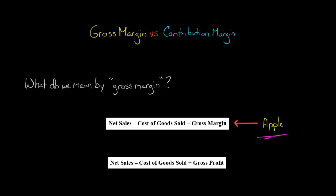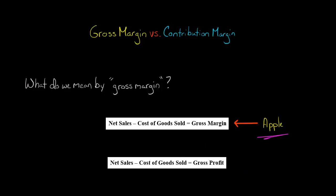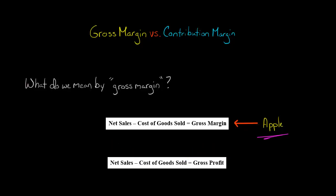Apple and a lot of other companies define gross margin as their net sales minus their cost of sales, or cost of goods sold. But sometimes people say that's actually gross profit when you take net sales and subtract cost of goods sold. And when you take gross profit and divide it by net sales, that's a company's gross margin. So we're going to ignore that distinction in this video — we're going to use Apple's definition of gross margin, which is net sales minus cost of goods sold, a.k.a. minus cost of sales.